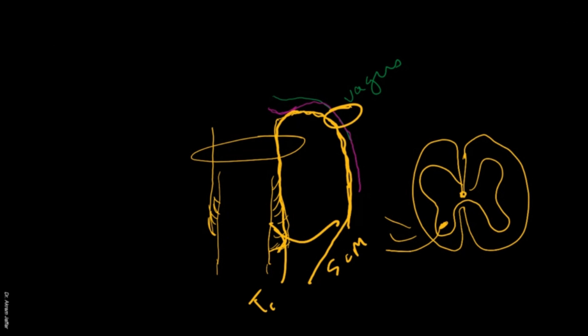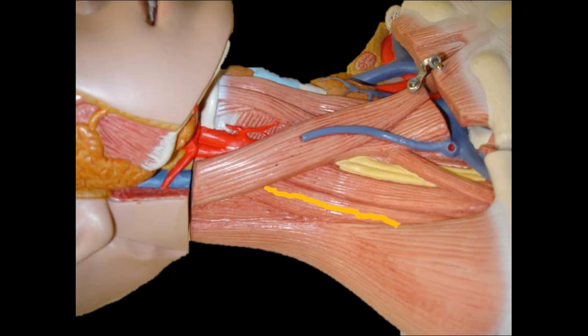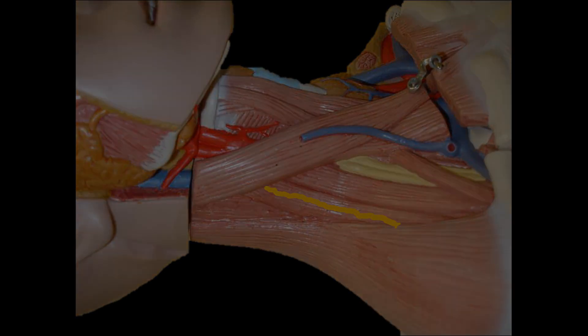The remaining part of the accessory — the cranial part — is a very small nerve that joins the vagus nerve and is distributed with the vagus nerve. That's why we call it the spinal accessory nerve: because it originally arises from cell bodies of neurons located in the upper four segments of the spinal cord. We can see it in the posterior triangle of the neck.